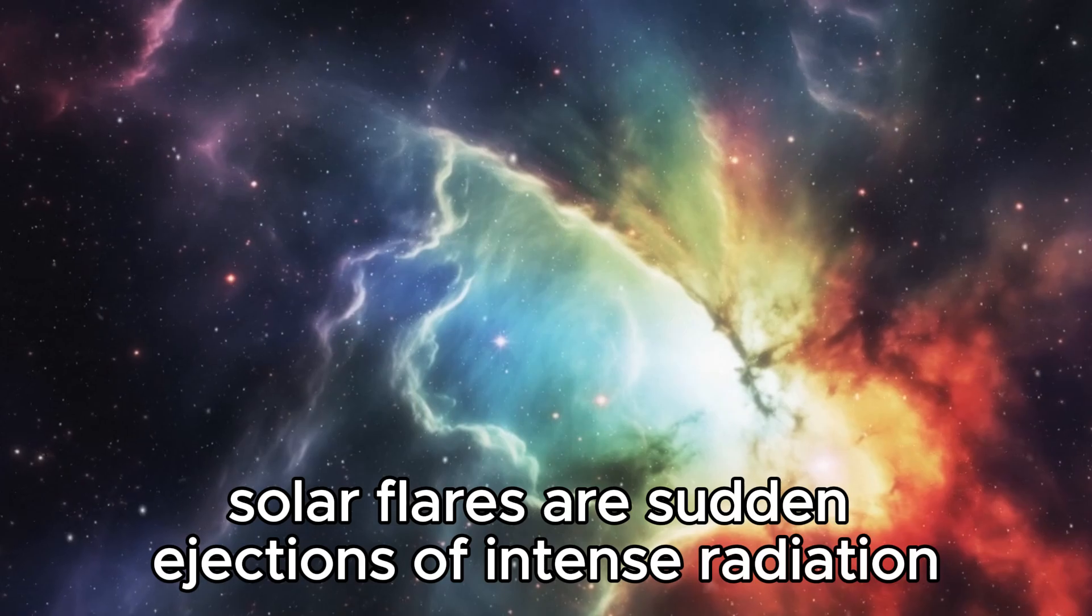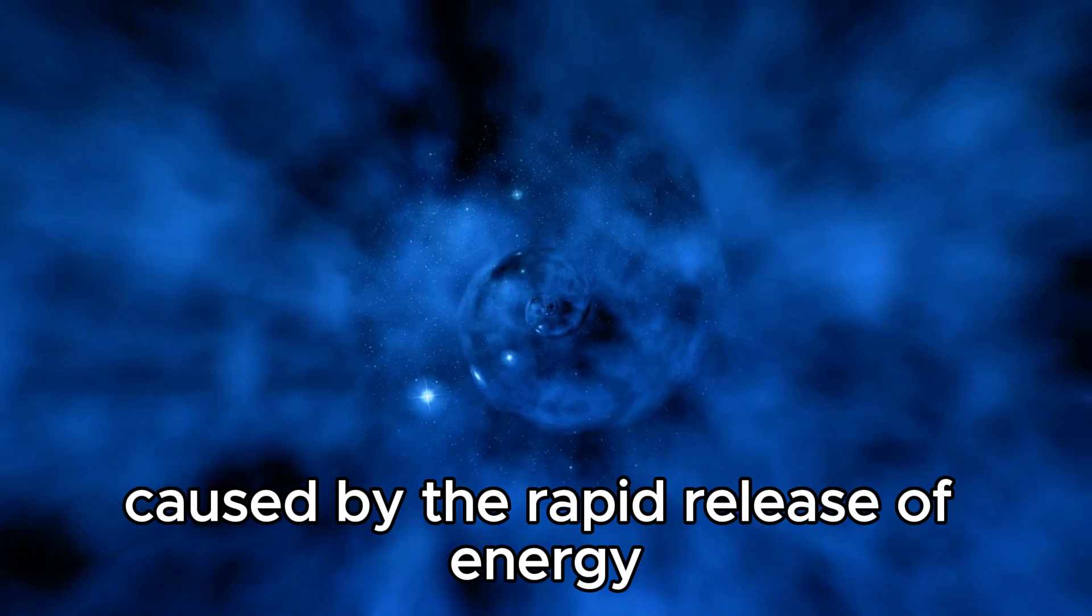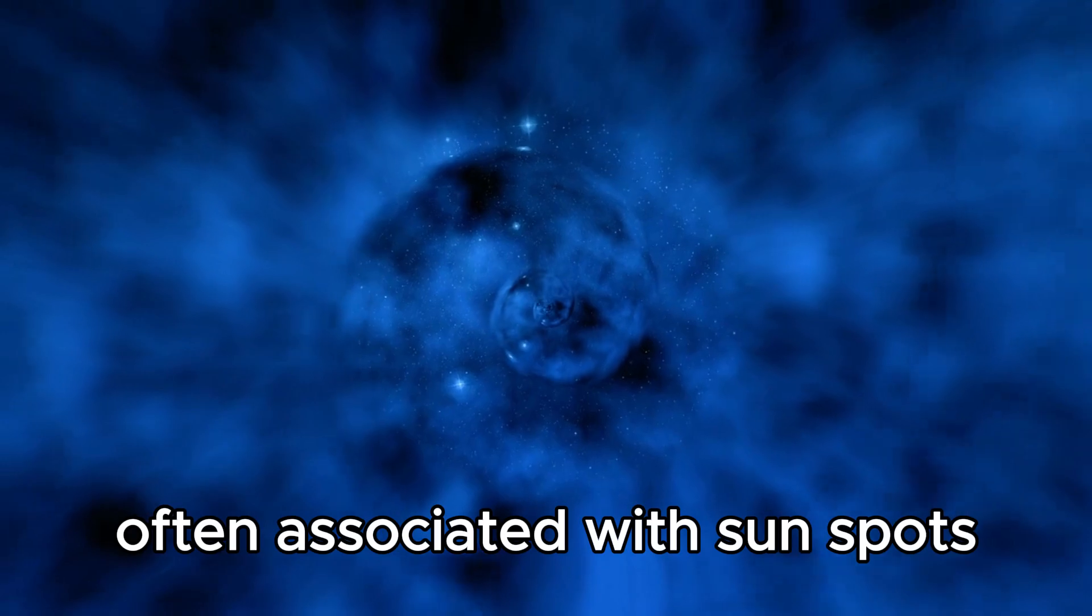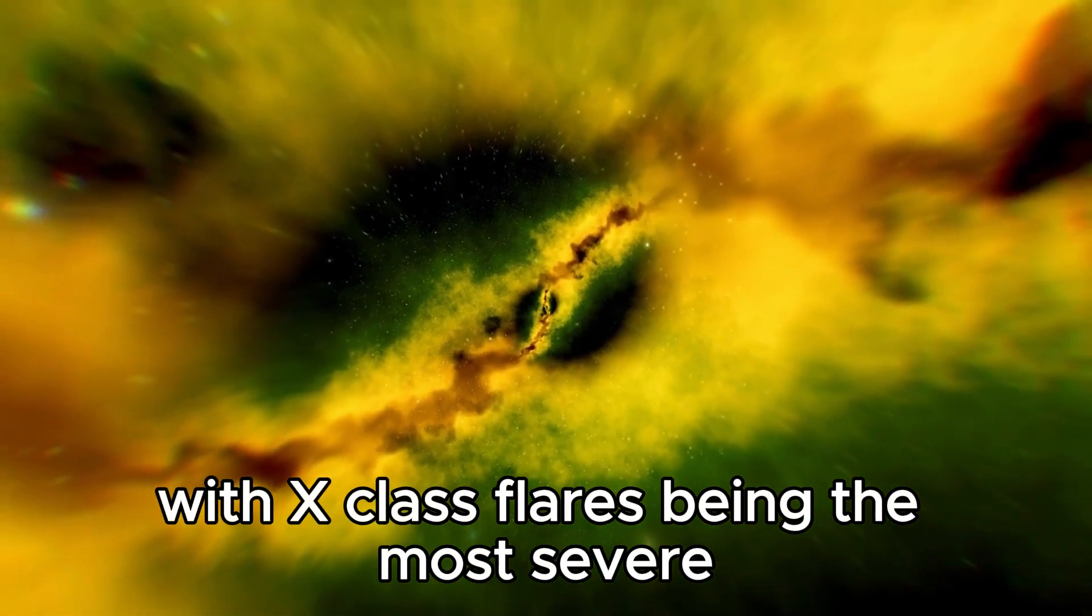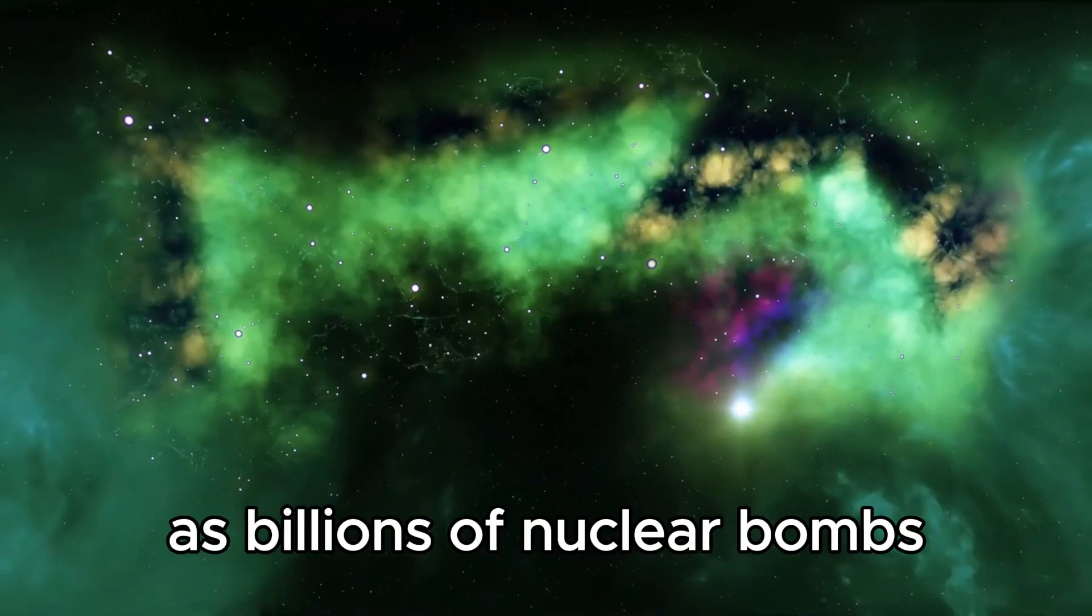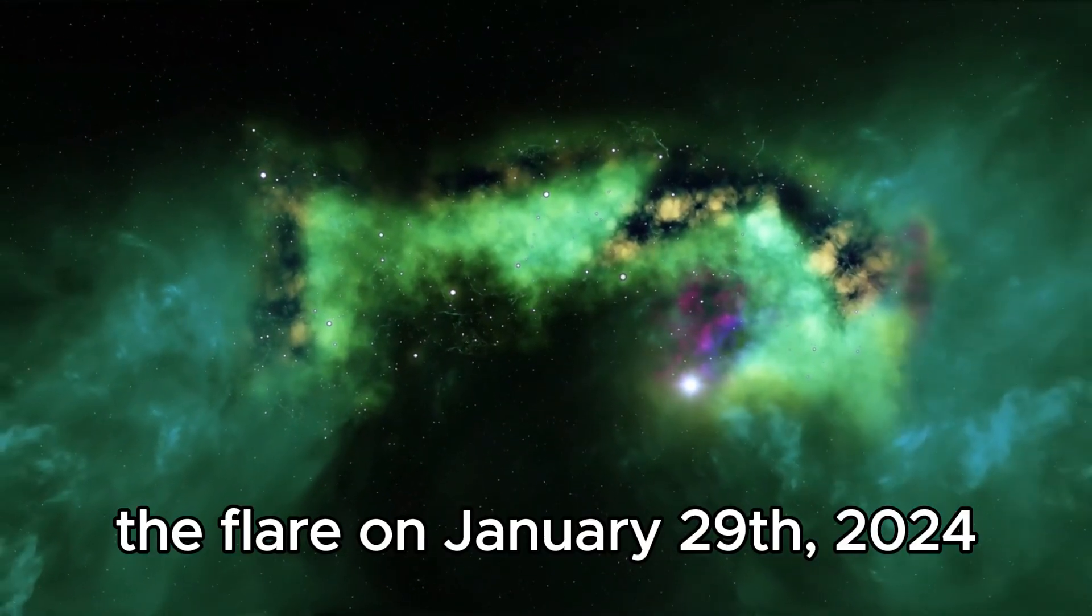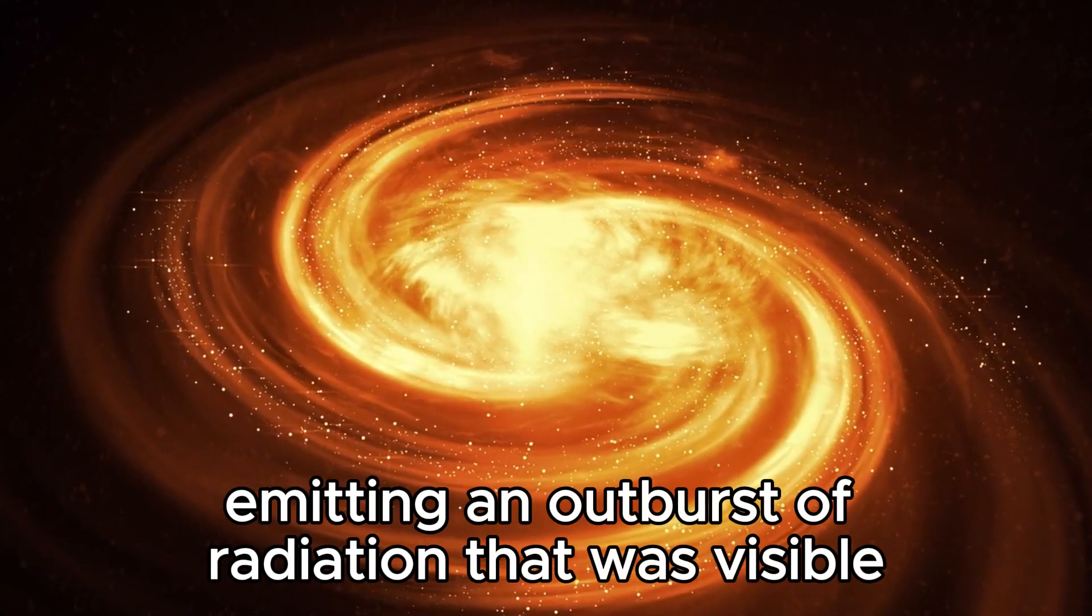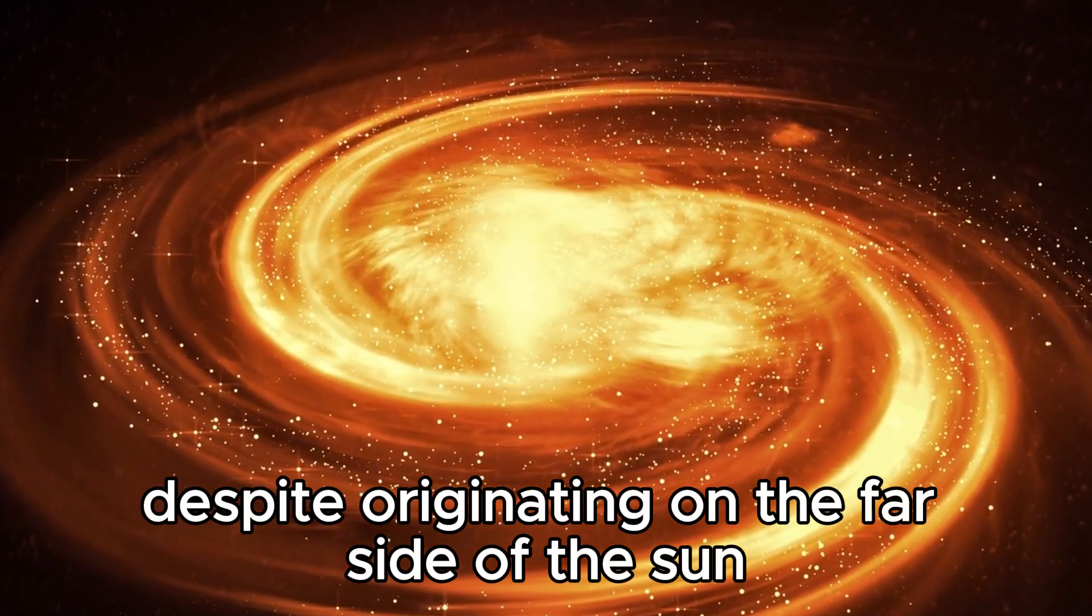Solar flares are sudden ejections of intense radiation and magnetic energy from the sun's surface, caused by the rapid release of energy stored in the sun's magnetic fields, often associated with sunspots. They are classified on a scale from A to X, with X-class flares being the most severe. These events can release as much energy as billions of nuclear bombs exploding simultaneously. The flare on January 29, 2024 reached X-class intensity, emitting an outburst of radiation that was visible even from Earth despite originating on the far side of the sun.